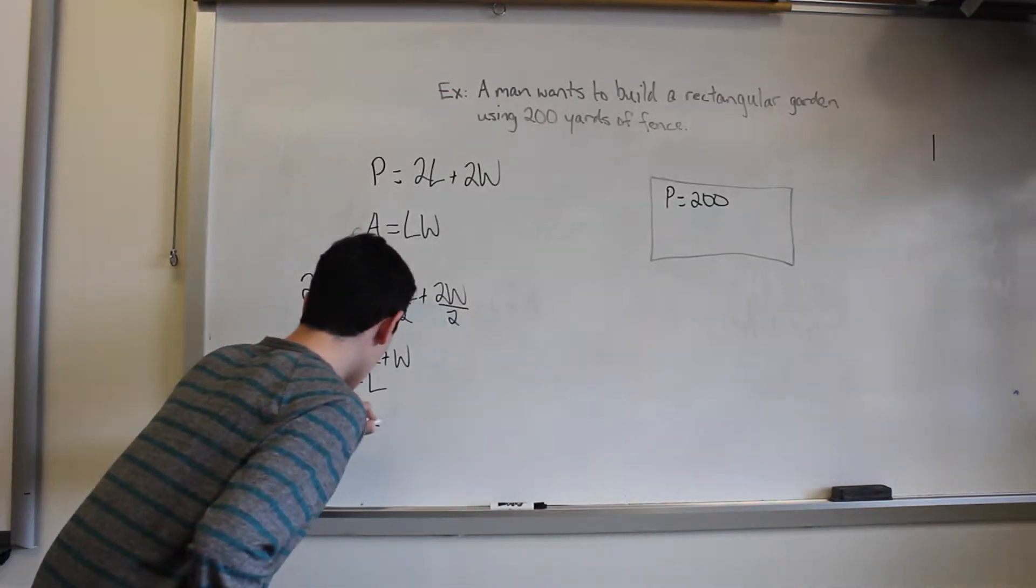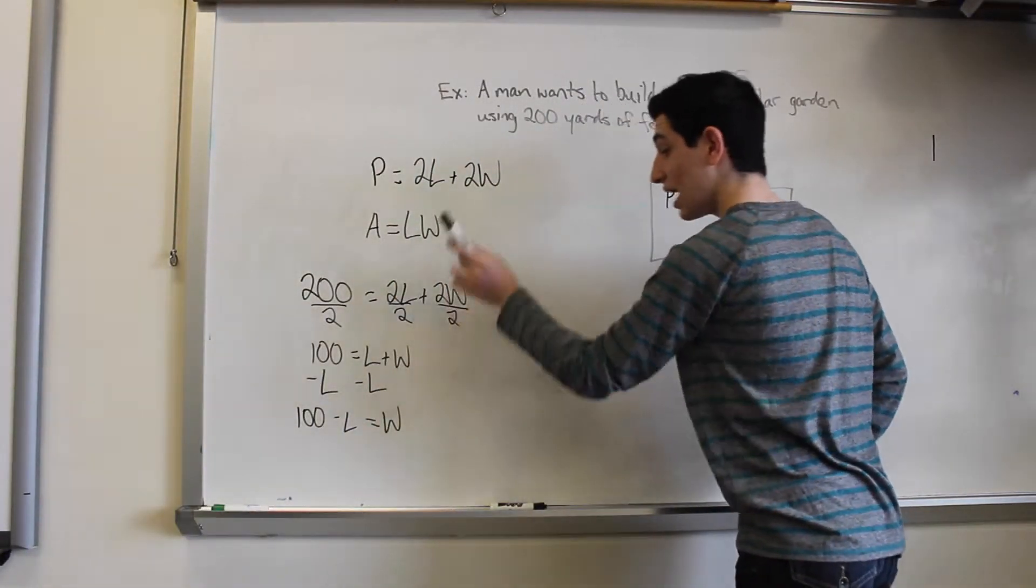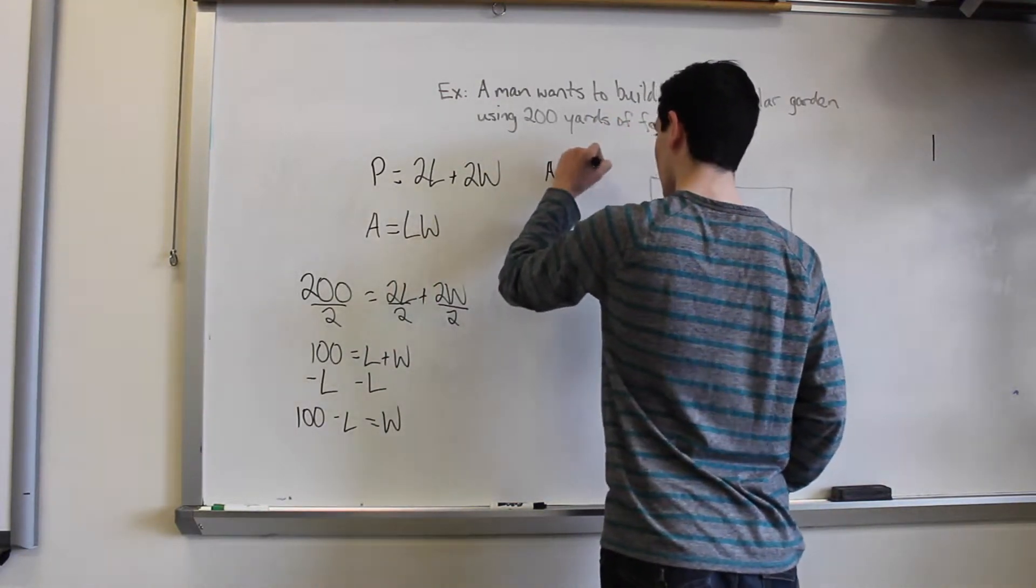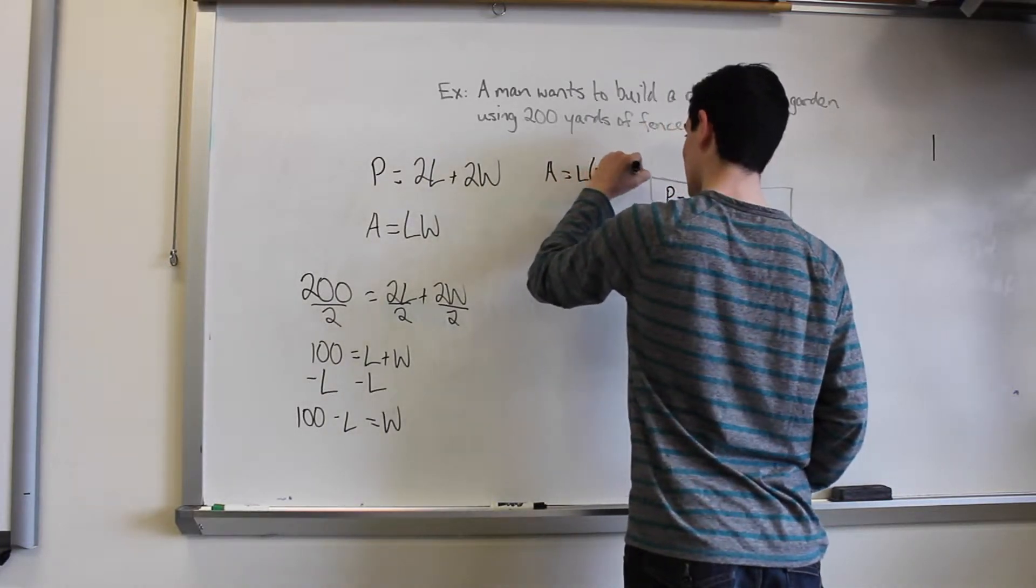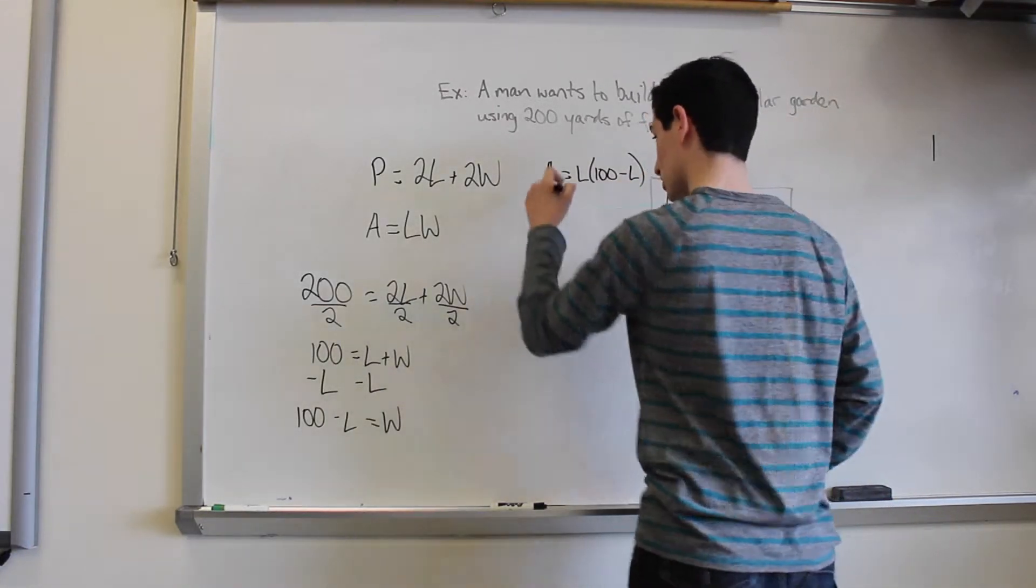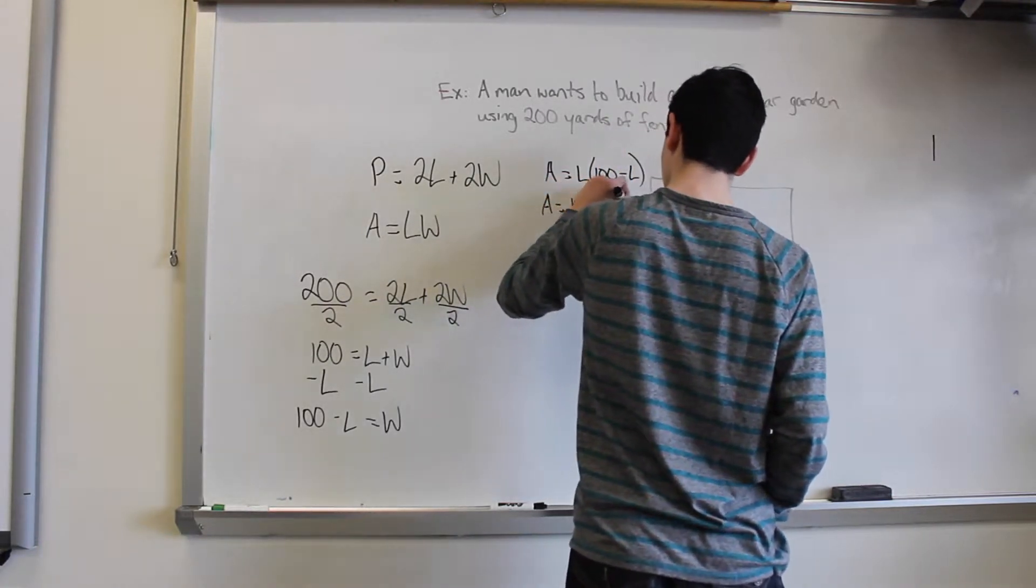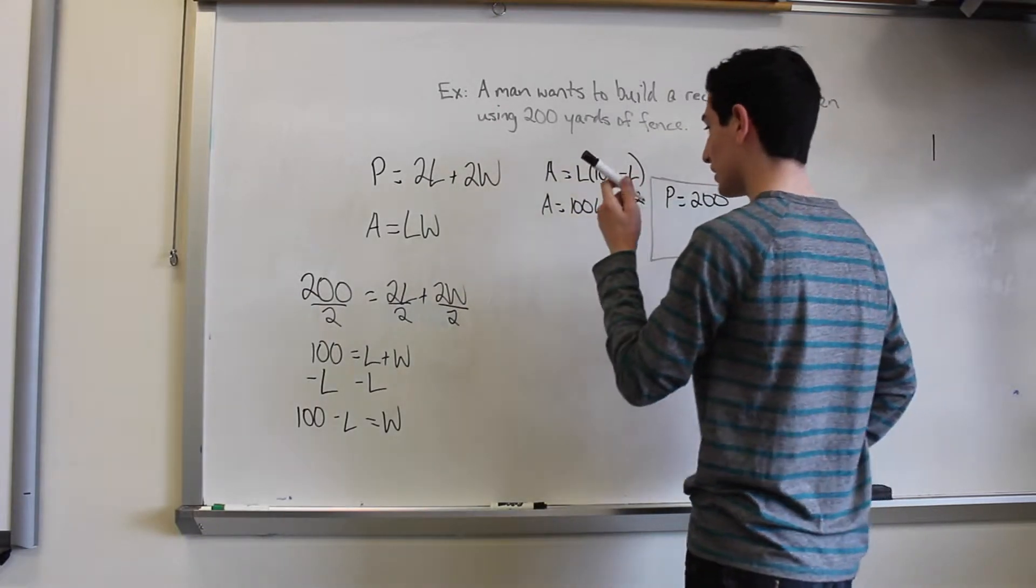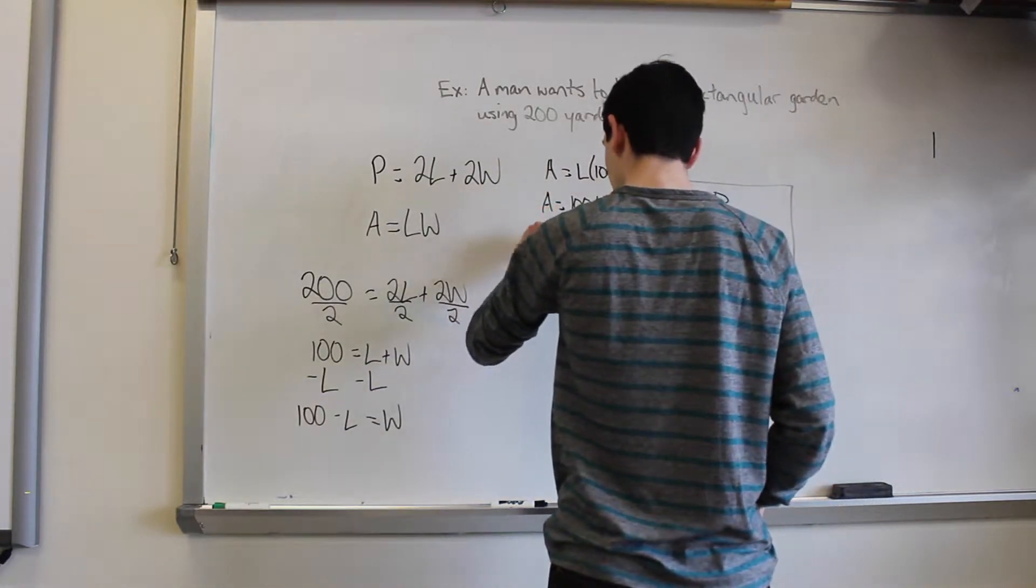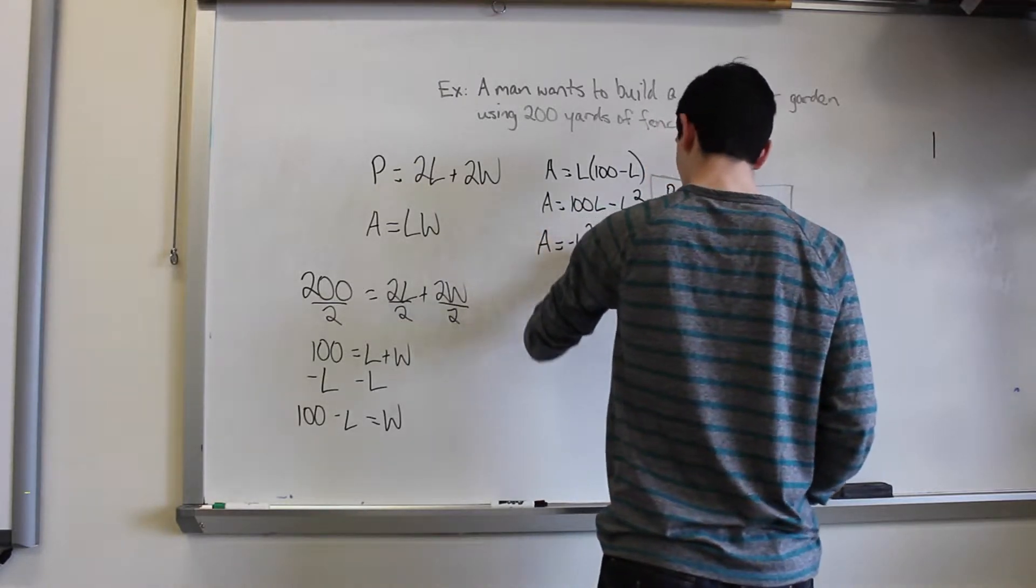Then we have a hundred minus the length equals the width. Now we can use what we just have for the width and substitute it into our area equation. So we have area equals length times a hundred minus length. So already you can see that we have like terms that we're using to match. Let's go ahead and make it 100 length minus length squared. Now we can rearrange this so that it's in standard form. So we have A equals negative L squared plus a hundred L.